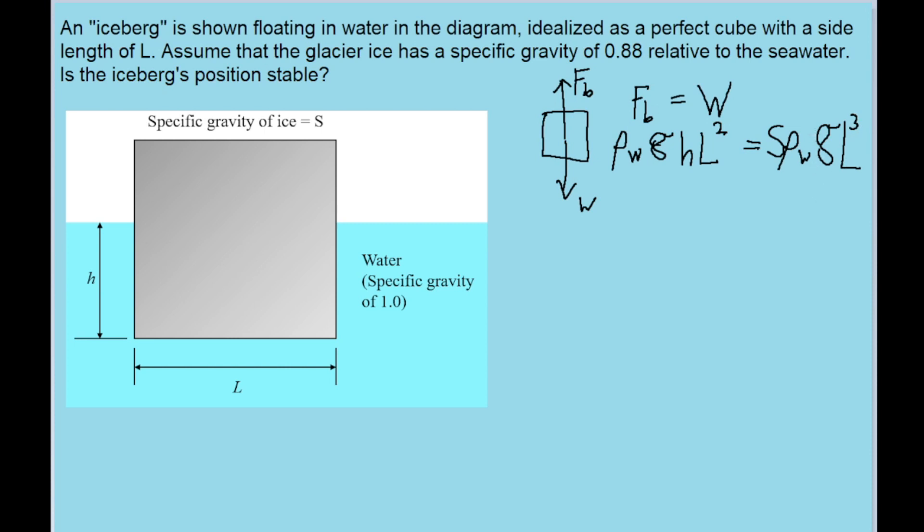Now let's simplify this. The g's can cancel out, and so does the density of water, and also two of these L's cancel out. So we're left with an equation telling us that h is equal to s times L, the side length of the cube. We'll just put this into our back pocket and hold on to it for later.